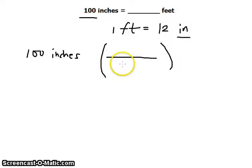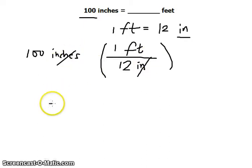We write in the denominator the unit that we want to cancel out, that would be the inches. In the numerator, we write the unit that we desire, and that would be feet. So we can cancel inches there.